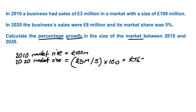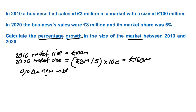And that would come to £160 million. And then we just show the percentage increase, which you can calculate just through your quick percentage change, which is always going to be new minus old over old times by 100.